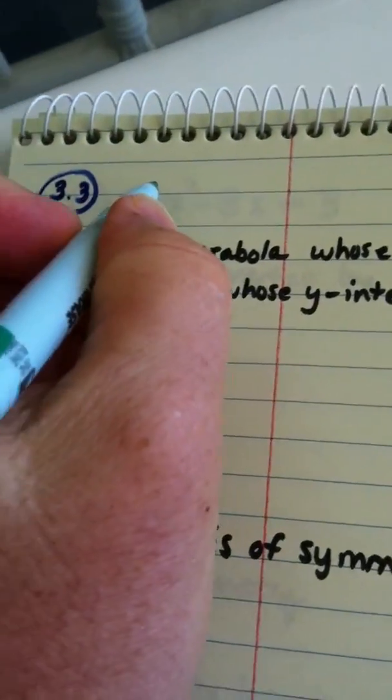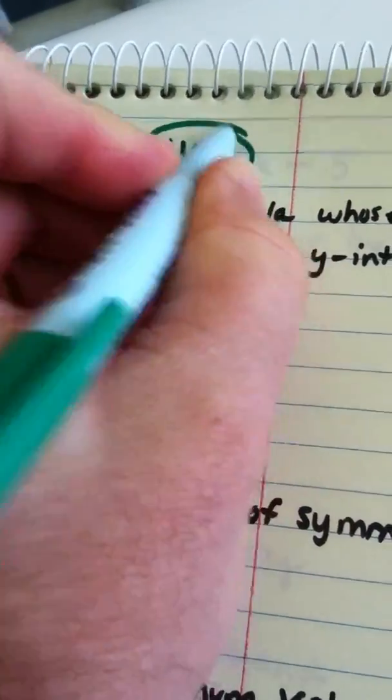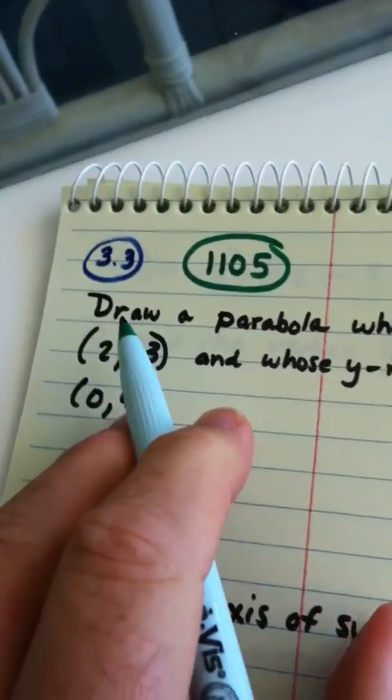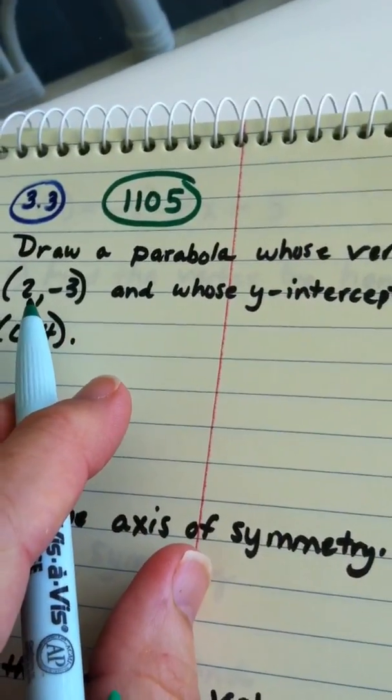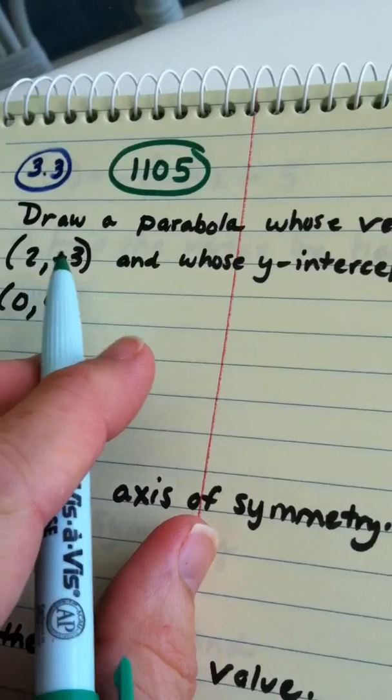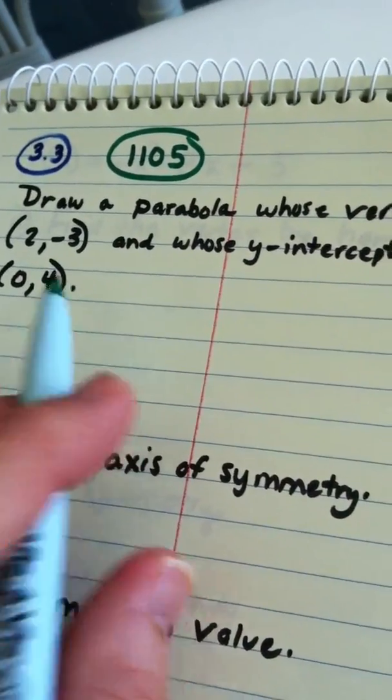All right, ladies and gentlemen, we're going to start here on section 3.3 in my Math 1105 class. The first set of directions ask us to draw a parabola whose vertex is given as the ordered pair 2, negative 3, and whose y-intercept is the ordered pair 0, 4.